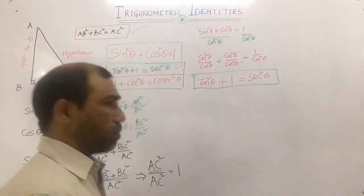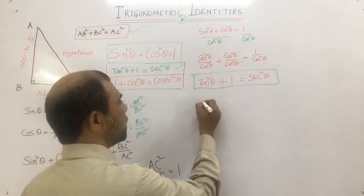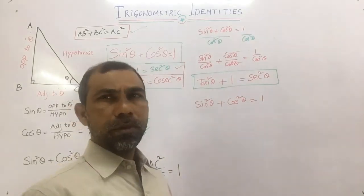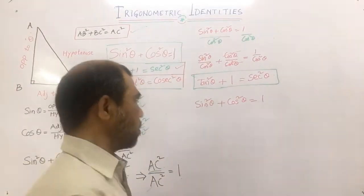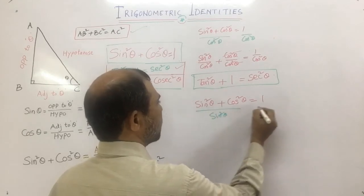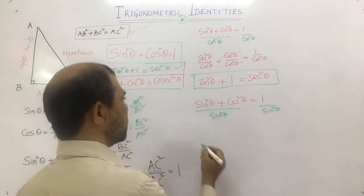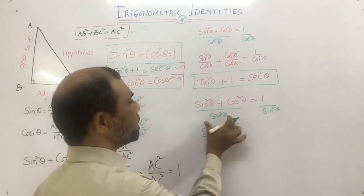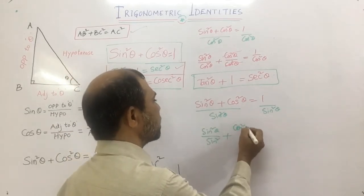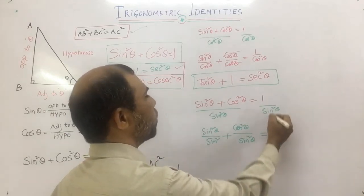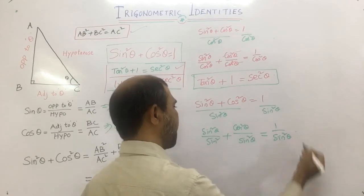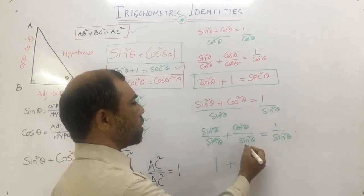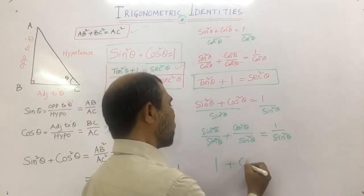Now let us prove the third identity. Starting again with sin²θ + cos²θ = 1, divide the whole equation by sin²θ. You get sin²θ/sin²θ + cos²θ/sin²θ = 1/sin²θ. sin²θ/sin²θ cancels to 1, and cos²θ/sin²θ is cot²θ. So we get 1 + cot²θ = 1/sin²θ, which is cosec²θ.